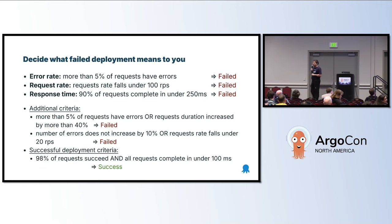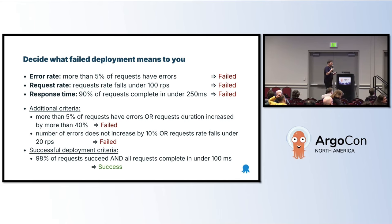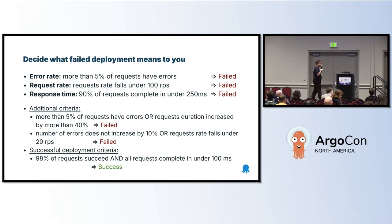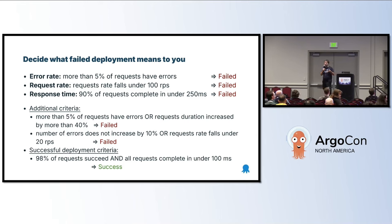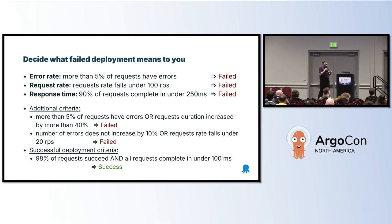If you have this, Argo Rollouts gives you the capability to decide exactly for each application what success means to you. You can say: for this application, success means that 95% of requests succeed. And if the number goes lower, you can make a decision. You can also combine requirements — for this application, if this happens and that happens, then it's a success. There is great flexibility, but you need to have the metrics in place already.